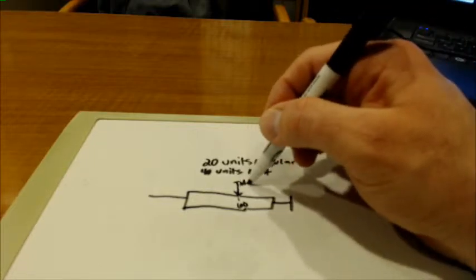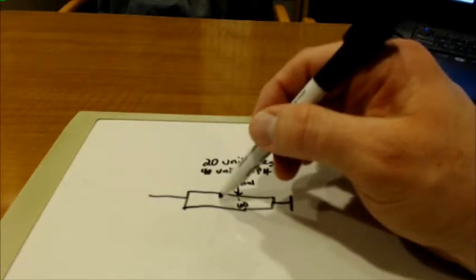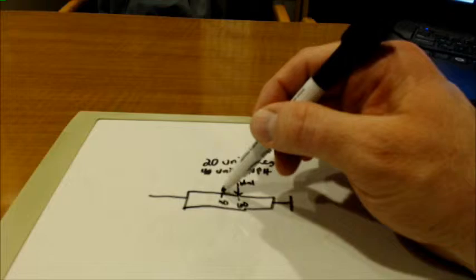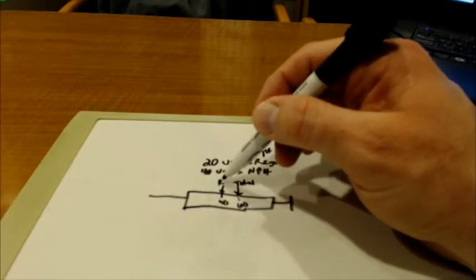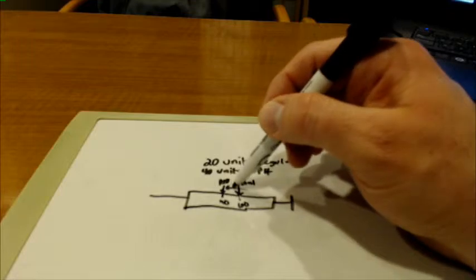You're actually going to have another mark at 40 units, and that is where the regular would be. The difference right here between 40 and 60—that 20—is where the regular insulin would be found.